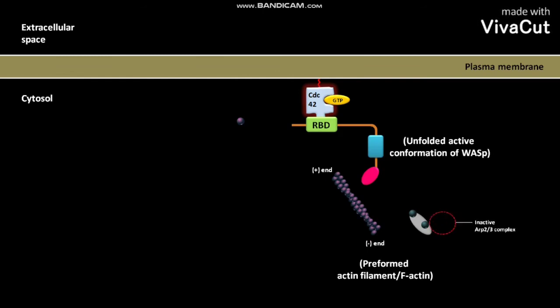The inactive ARP2/3 complex then binds to the side of the preformed actin filament or F-actin and to the acidic domain of WASP protein. This acidic domain of WASP protein acts as the activator of inactive ARP2/3 complex.